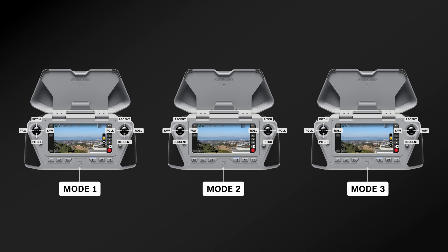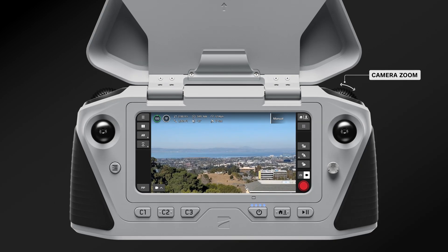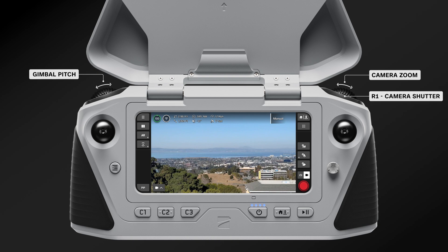Additional control modes are available to accommodate different flying styles. The right wheel on your controller controls your camera zoom. You also have the option to set your right wheel to adjust your exposure value instead. And the left wheel adjusts the camera gimbal pitch. The top right button, or R1, is your camera shutter button and will capture a photo or video.